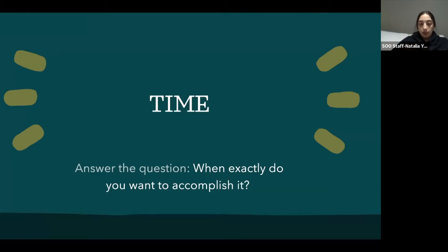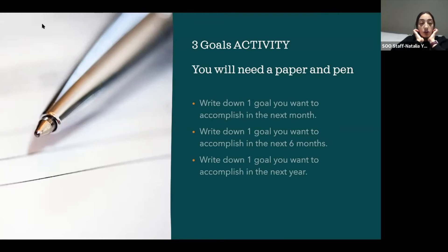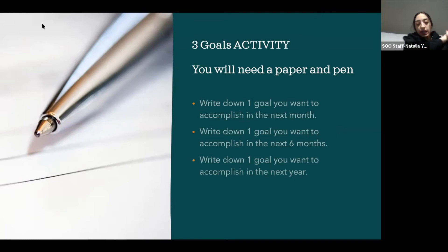We're going to do a little activity — you can use paper and pen or just do this in your head. I want you to write down a SMART goal you want to accomplish in the next month, the next six months, or the next year. You can write down one goal or three goals — it's up to you. Remember: be Specific, Measurable, Attainable, Realistic, and set a Time period. I'll give everyone a few minutes, and then we'll share if you'd like to.